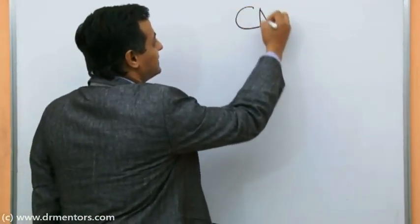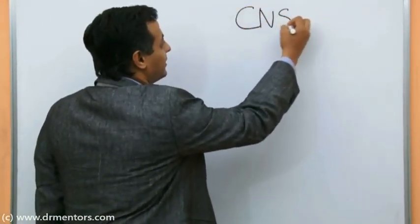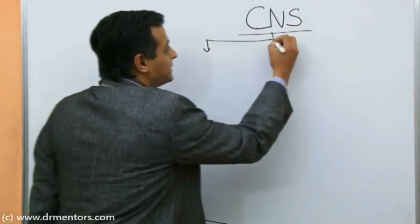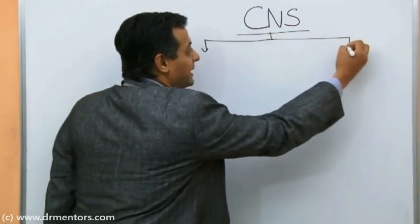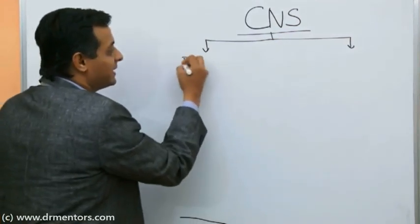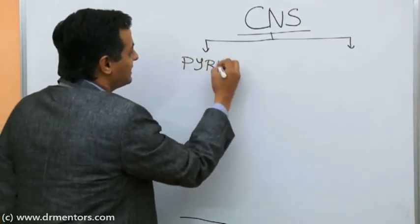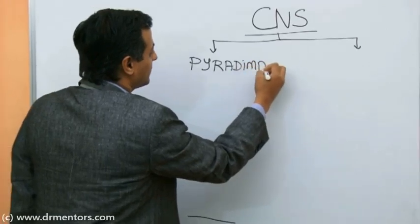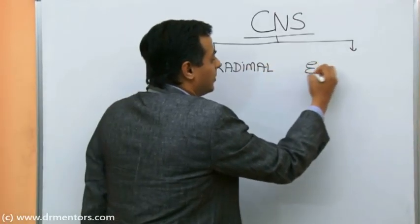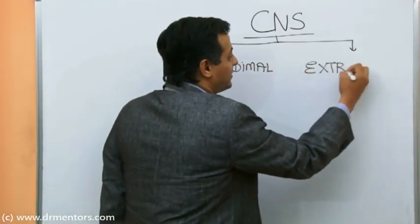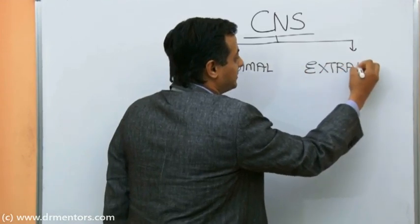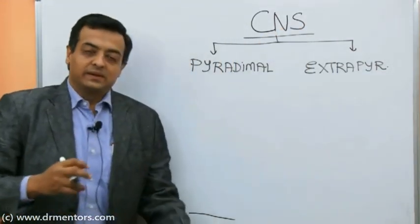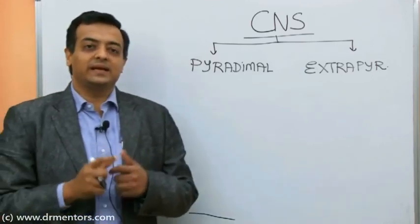So how do we do that? We are going to take the large CNS and categorize it into two types. Broadly, CNS can be classified into the pyramidal system and the extra-pyramidal system.